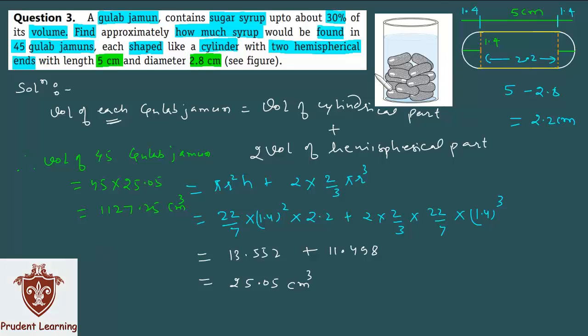Now you have the total volume of all Gulab Jamuns - 45 Gulab Jamuns. And what was given in the question? That the sugar syrup content is 30 percent of the Gulab Jamun's volume. Because of this, how much will the sugar syrup content be? It is 30 percent of this total volume.